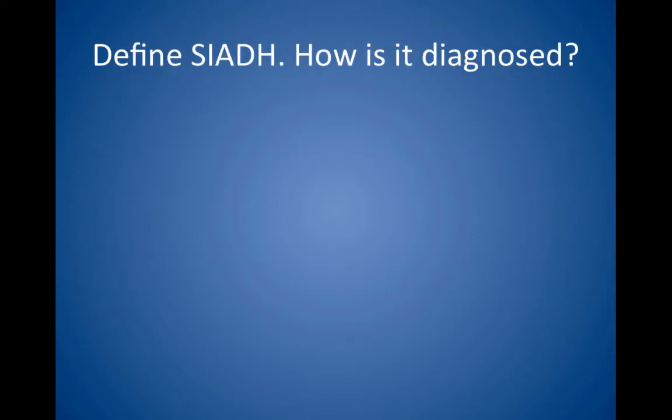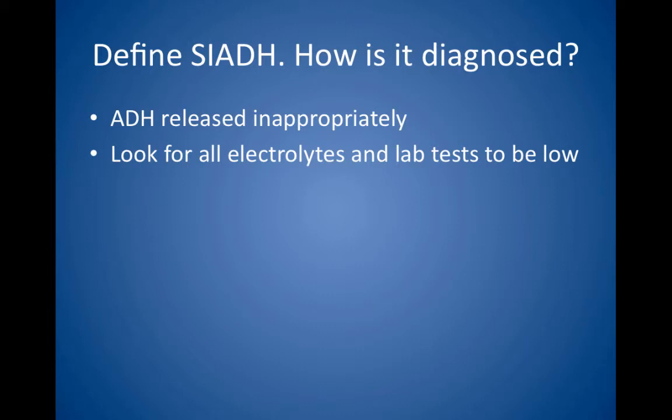Define the Syndrome of Inappropriate Antidiuretic Hormone Secretion, or SIADH. How is it diagnosed? The name says it all — ADH is released inappropriately. SIADH is a consideration in patients with hyponatremia and normal volume status. In SIADH, serum osmolarity is low but urine osmolarity is high — there is inappropriate urine concentration. Look for the values of all electrolytes in lab tests to be low. The classic example is a low uric acid level, because of dilution of the serum with free water secondary to inappropriate ADH.